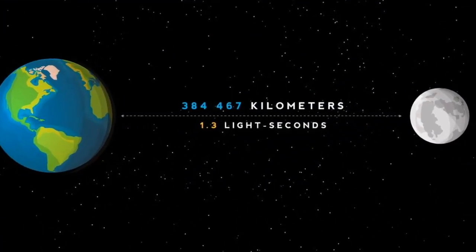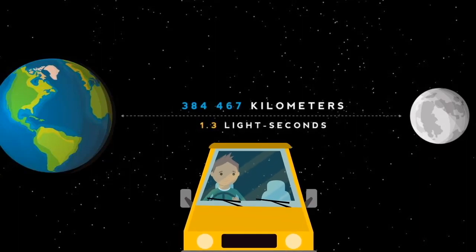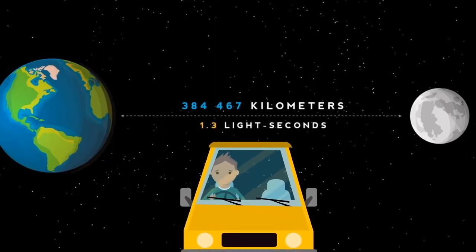So just how far away is our neighbor? Around 238,900 miles. That's like driving around Earth 30 times.